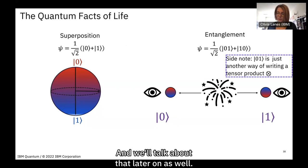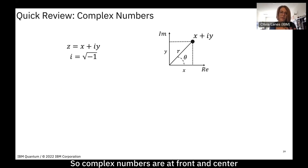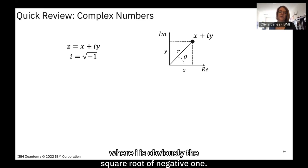As a quick review to make sure we're all on the same page, let's step back before getting too mathematical. Complex numbers are at the heart of quantum mechanics. A complex number can be written as its real component plus i times its imaginary component, where i is the square root of negative one.